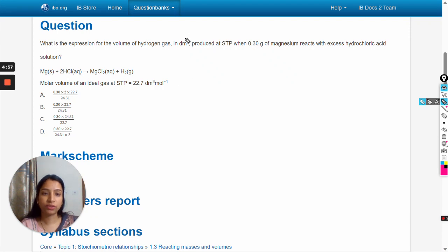Hello dear students, in this video we will solve this question: What is the expression for the volume of hydrogen gas in decimeter cubed produced at STP when 0.30 grams of magnesium reacts with excess hydrochloric acid solution? The reaction equation is given.